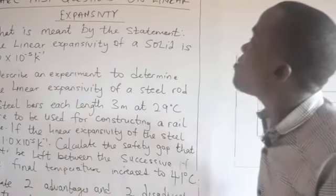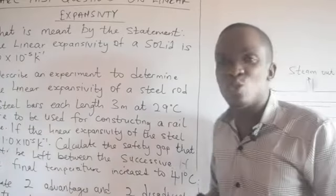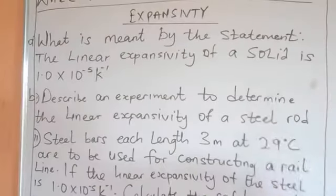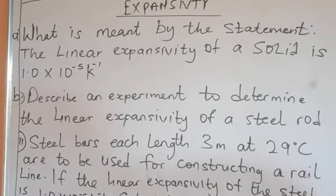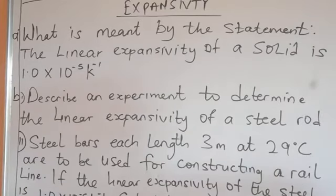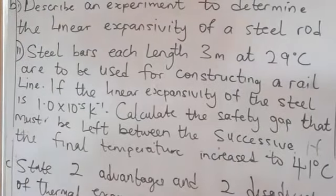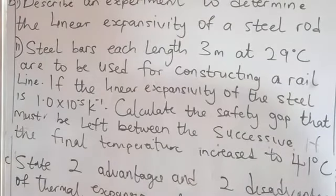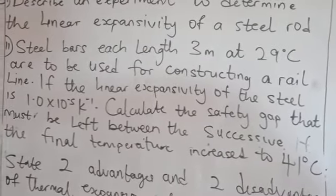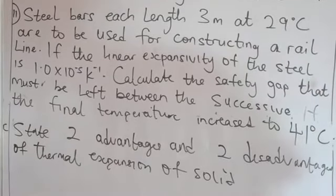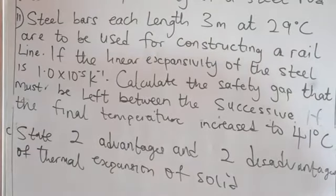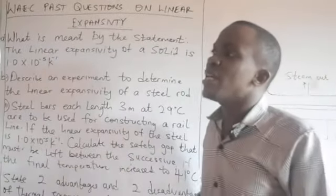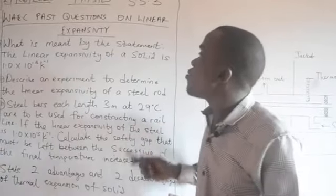Question A asks: what is meant by the statement, 'the linear expansivity of the solid is 1.0 times 10 to the minus 5 per Kelvin'? Question B, part 1, asks to describe an experiment to determine the linear expansivity of a steel rod. Part 2 gives steel bars each of length 3 meters at 29 degrees Celsius to be used for constructing a rail line, with linear expansivity of steel given as 1.0 times 10 to the minus 5. Question C asks to state 2 advantages and 2 disadvantages of thermal expansion of solids. Many of us are used to defining what linear expansivity is.